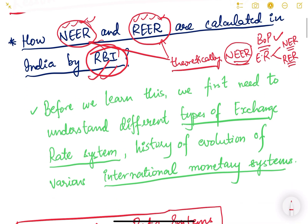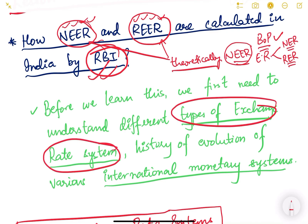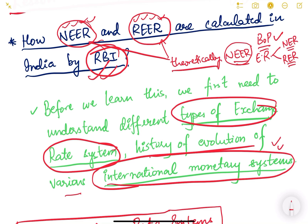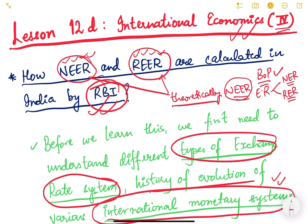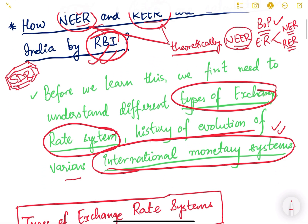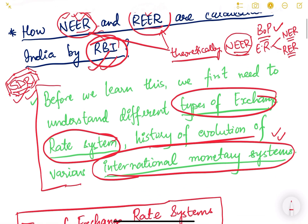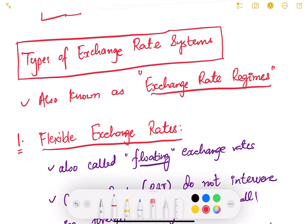Before we look at how RBI calculates NEER and REER, we need to first understand the different types of exchange rate systems that have existed globally — the history of evolution of various international monetary systems. This is important because when we study how RBI calculates NEER and REER, we will encounter a new concept known as SDR — Special Drawing Rights. So in this video, we will first cover the different types of exchange rate systems and then get introduced to SDR.